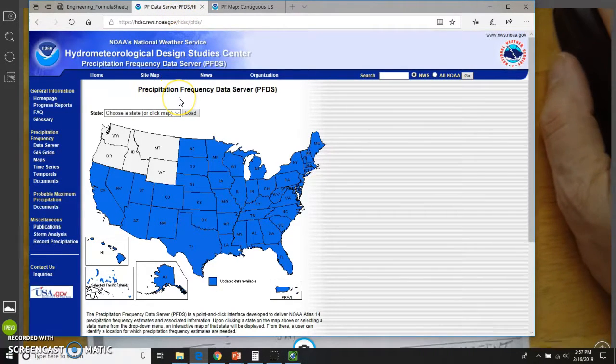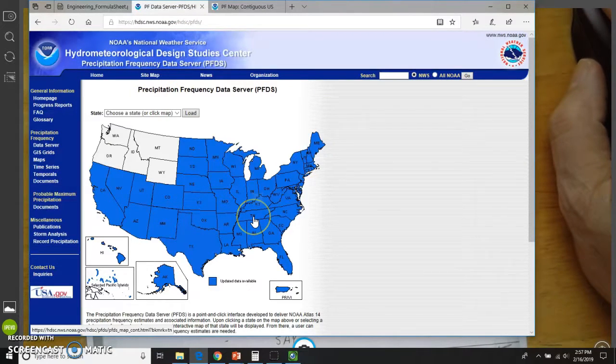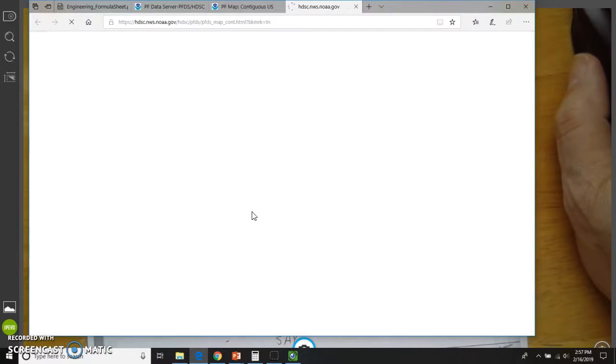Here we go. This is it. This is when you do that search, this is what you find. You're going to click on the state here. We're in Nashville, Tennessee. So Tennessee is down here right now, and I just select that.